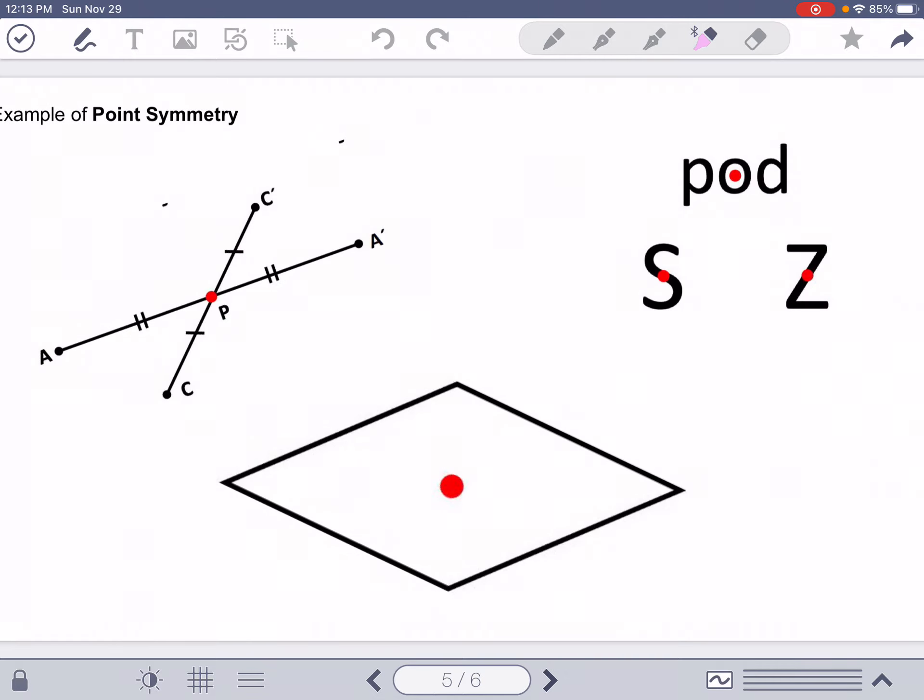Point symmetry. So here's point symmetry. If I were to take these lines and rotate them, they're going to look the same. I would rotate them around those points, and it would look the same.